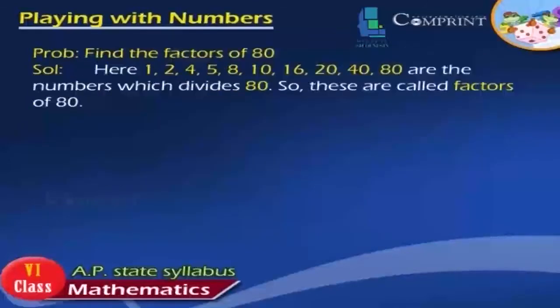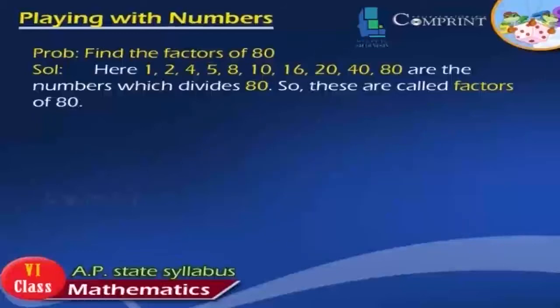Problem: Find the factors of 80. Solution: 1, 2, 4, 5, 8, 10, 16, 20, 40, and 80 are the numbers which divide 80 exactly. So these are called the factors of 80.